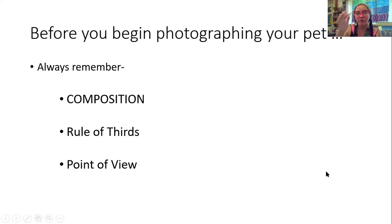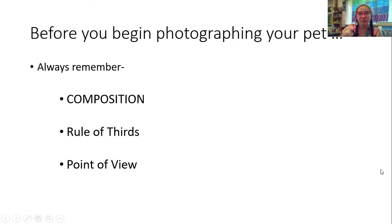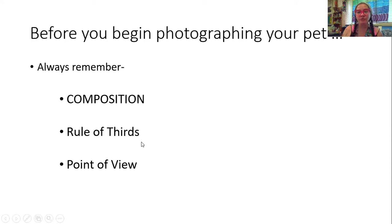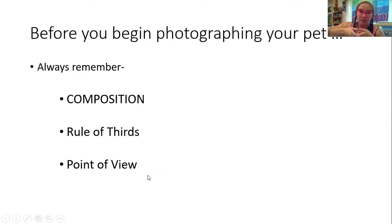Before you begin photographing your pet, please remember — especially those of you who had me last year when we did photography all spring — there are important rules for creating a strong photograph. Your composition needs to be awesome. That means you want your viewer's eye to be moving around the image. The rule of thirds — typically you don't want to put your pet right in the middle of the camera. There are always exceptions, but in photography the rule of thirds is what keeps your viewer's eye looking at your image longer because it is a stronger composition. Point of view: we'll talk about the ant's eye view, where you're getting down on the ground and looking up, or the bird's eye view, where you're getting above your subject and shooting down at them. The angle creates a stronger composition.